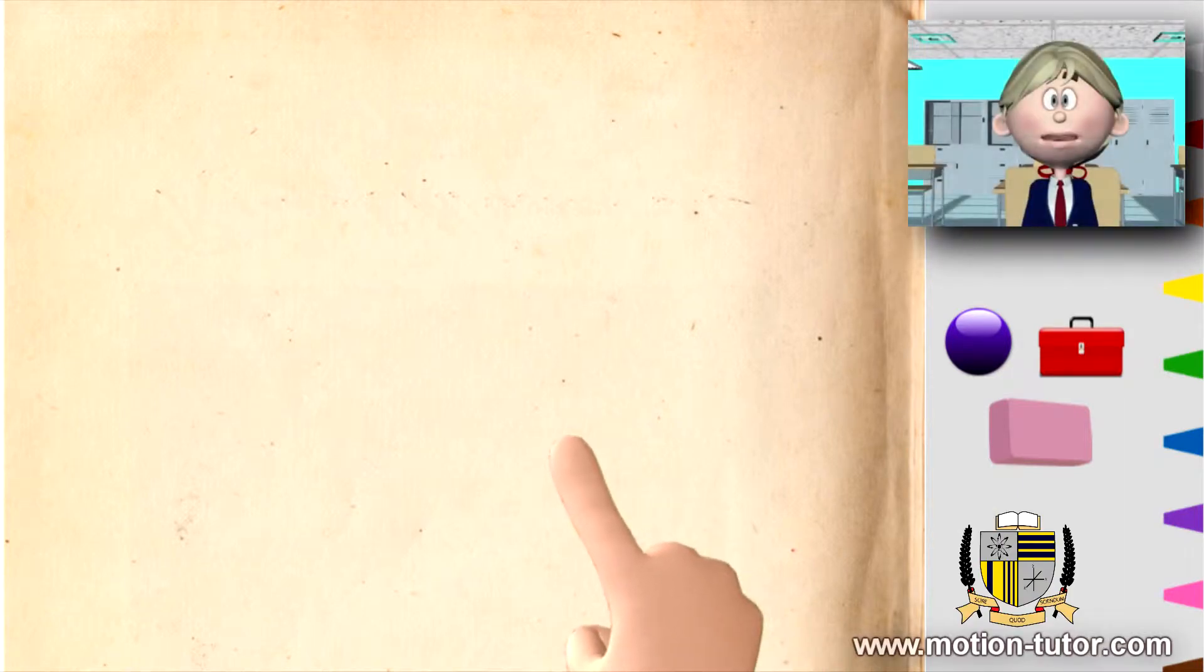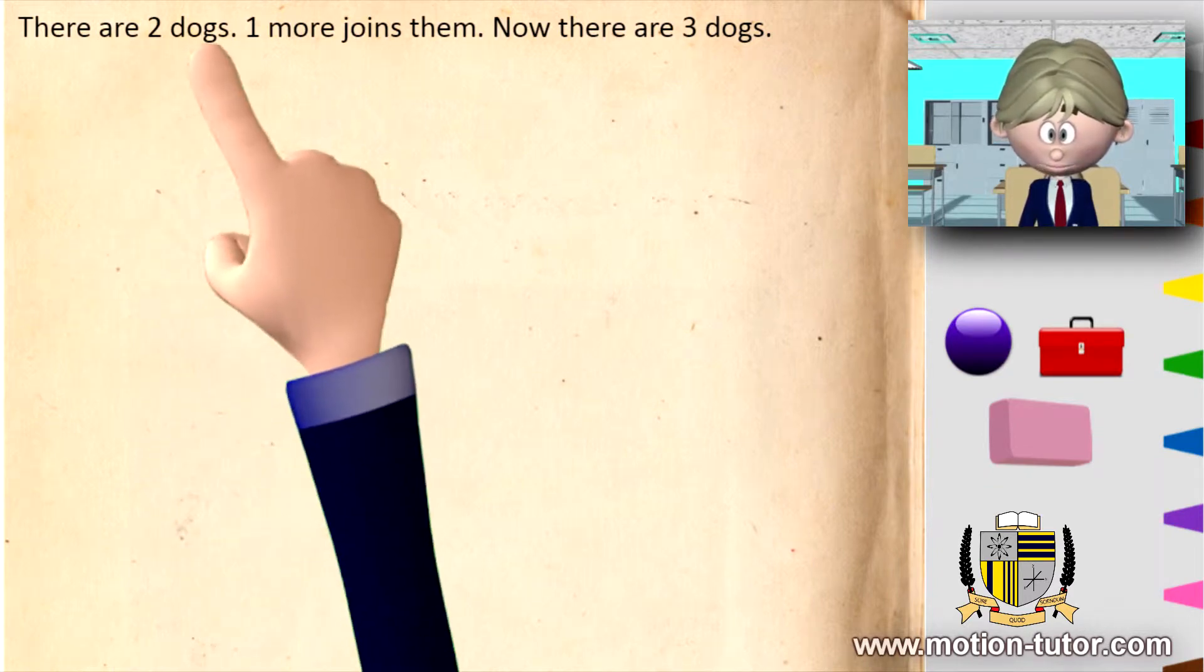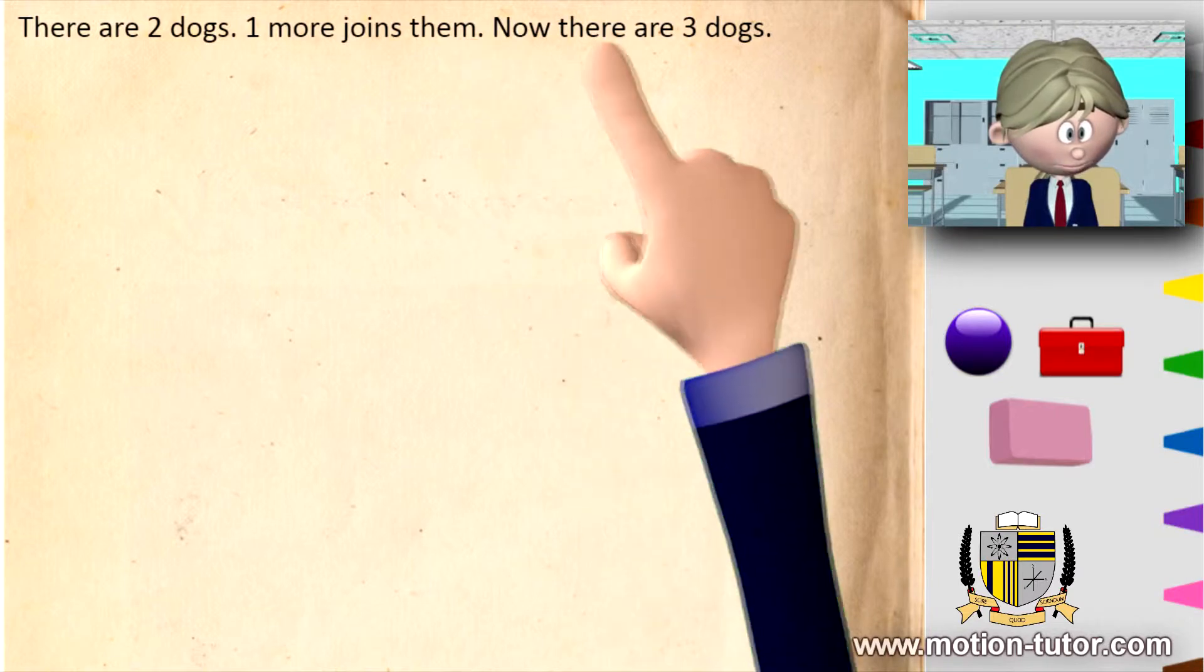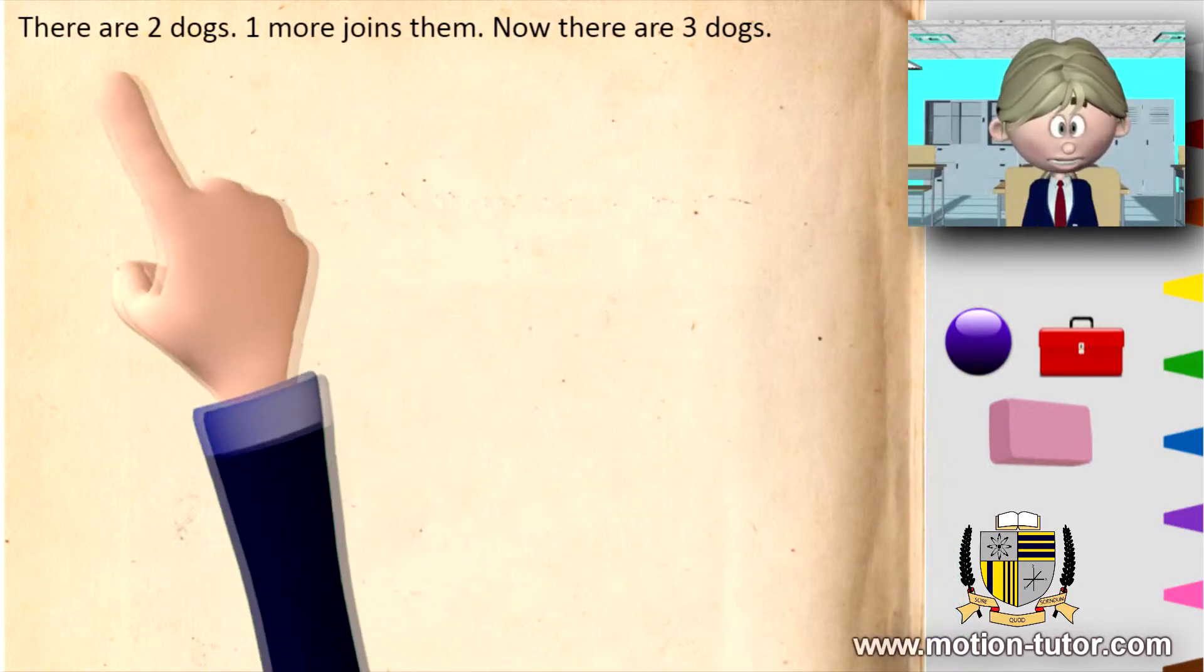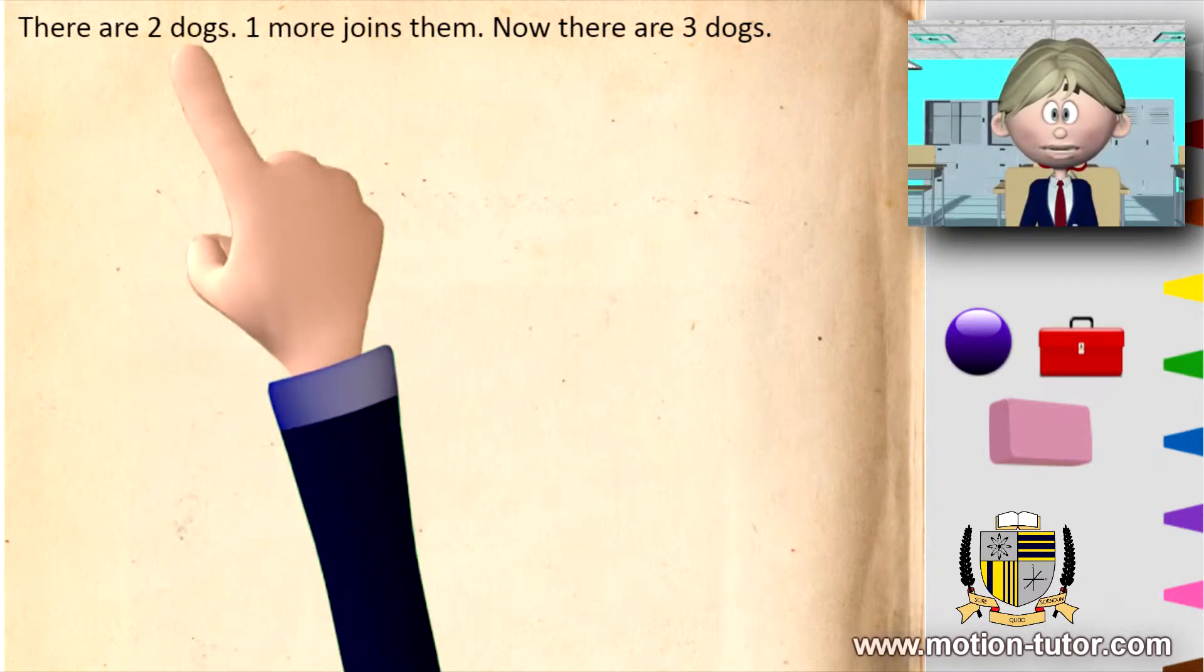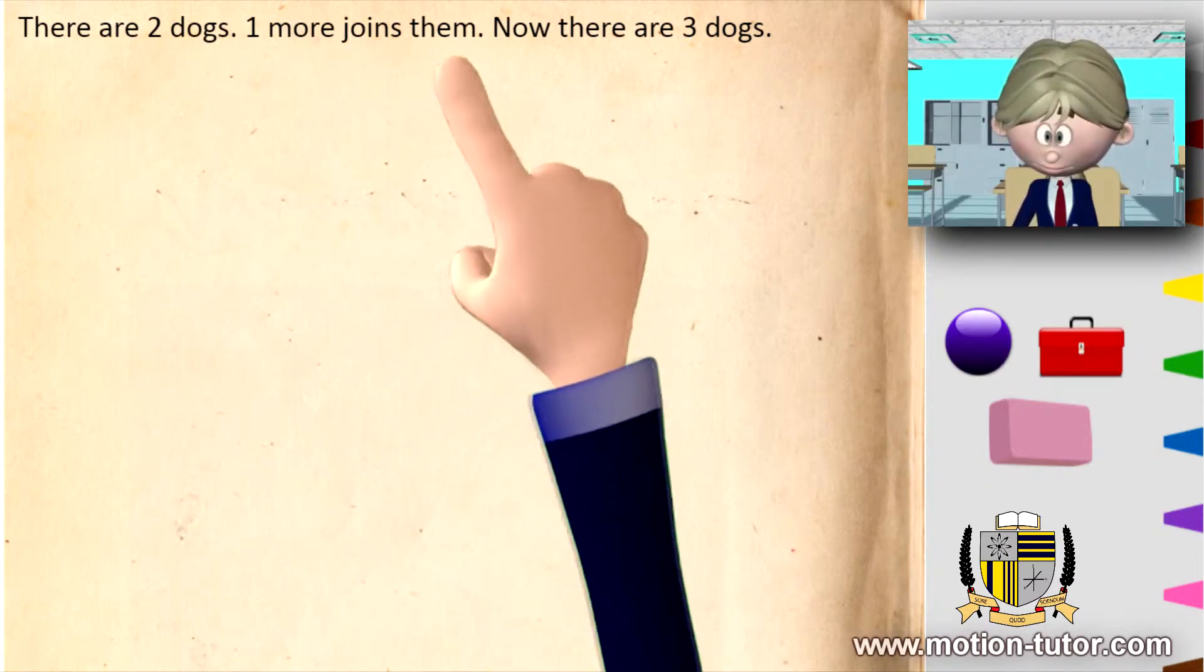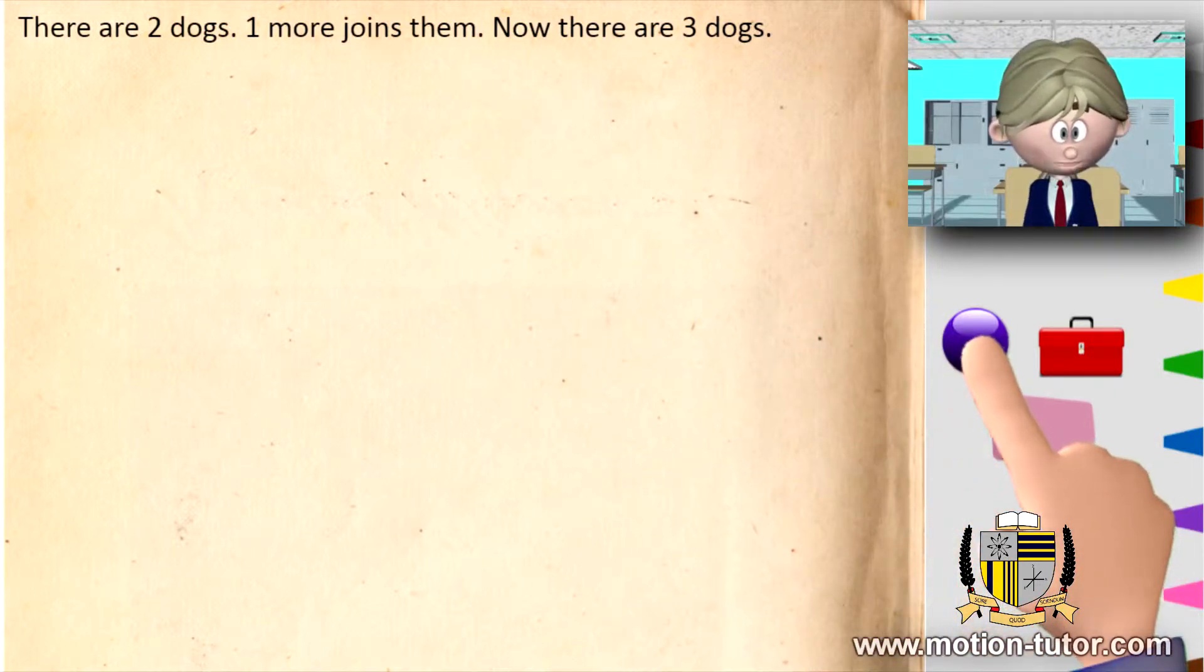Let's check out some examples that are related to addition. There are two dogs and one more joins them, now there are three dogs. So I'll read this again: there are two dogs, remember two dogs, and one more joins them. Now there are three dogs. We will use these balls as counters to help us count and see how addition works.